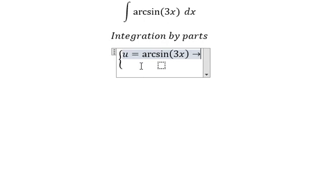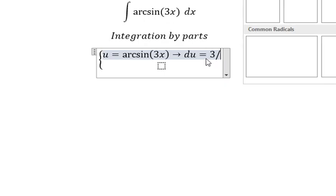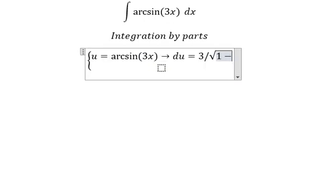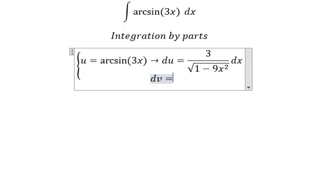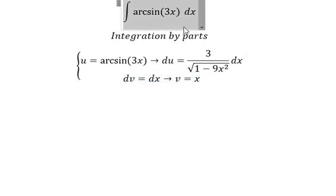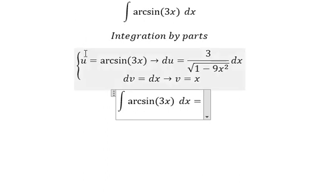So we need to differentiate both sides and we have du like this. dv equals dx, so when we integrate this we have v equals to x. So we have u multiplied by v.